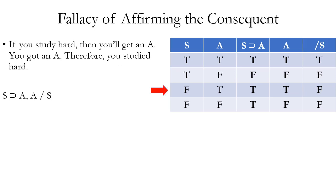Now let's look at a fallacy — an invalid argument form — called affirming the consequent. It starts with a conditional, but the other premise is the consequent rather than the antecedent. Ordinary language example: 'If you study hard, then you'll get an A. You got an A, therefore you studied hard.' Row three of the truth table shows both premises true and the conclusion false, proving it's invalid. All substitution instances of this form are also invalid.